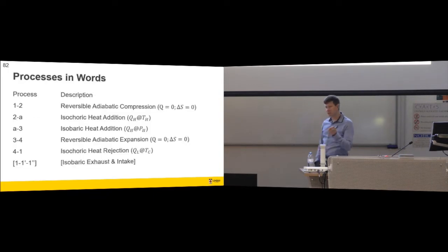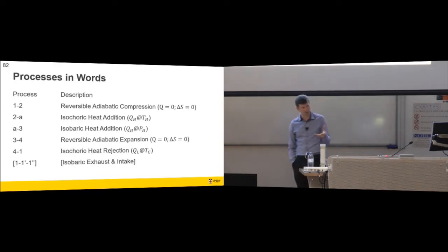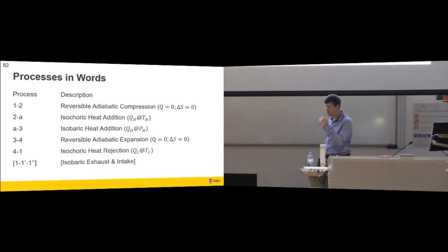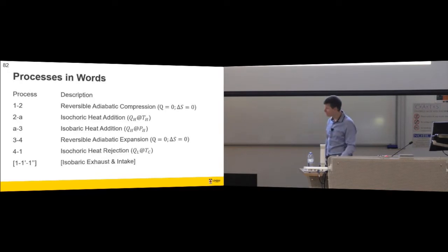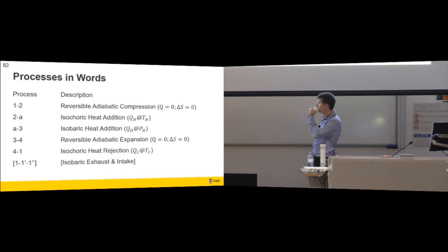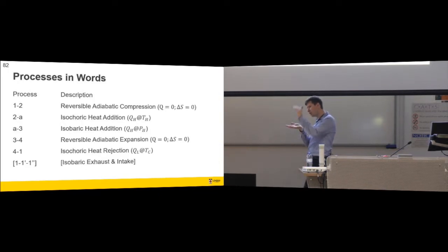There are five processes. A thermodynamic cycle doesn't have to be four processes — this one's five. It's not unusual to get to eight or nine in the Rankine cycle, which is where we're going in a few weeks' time. So you compress, you add heat isochorically, you add heat isobarically, then you expand.